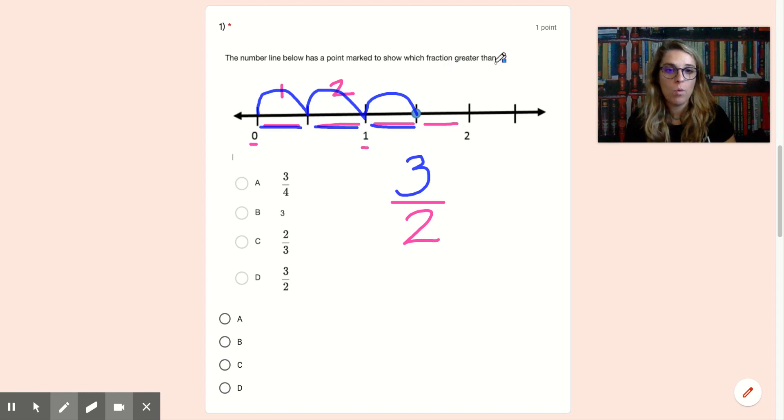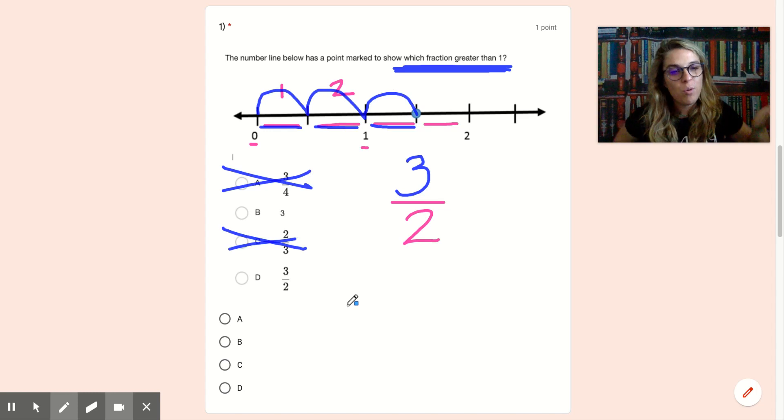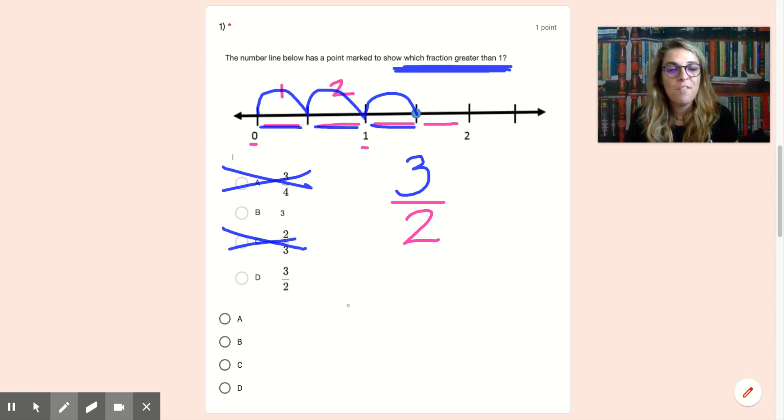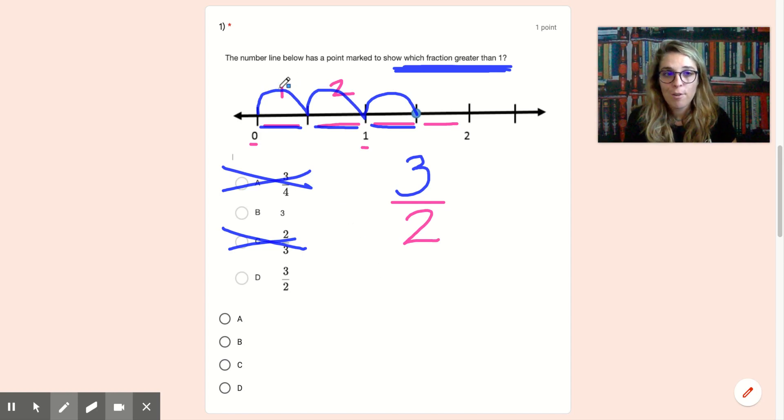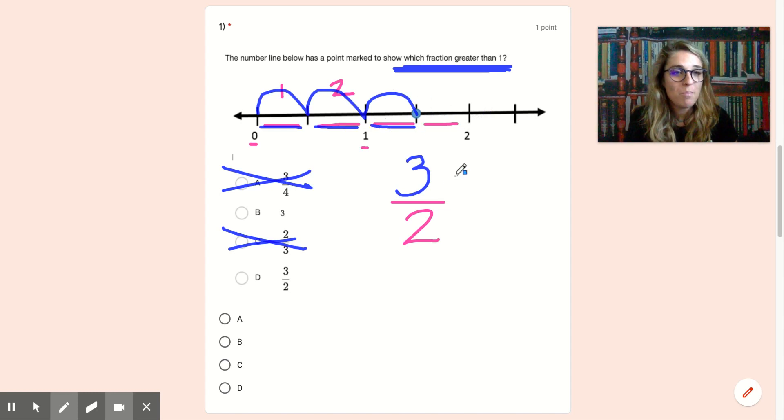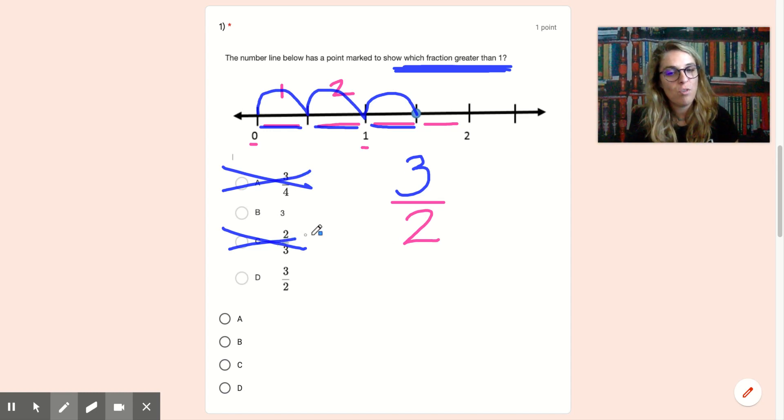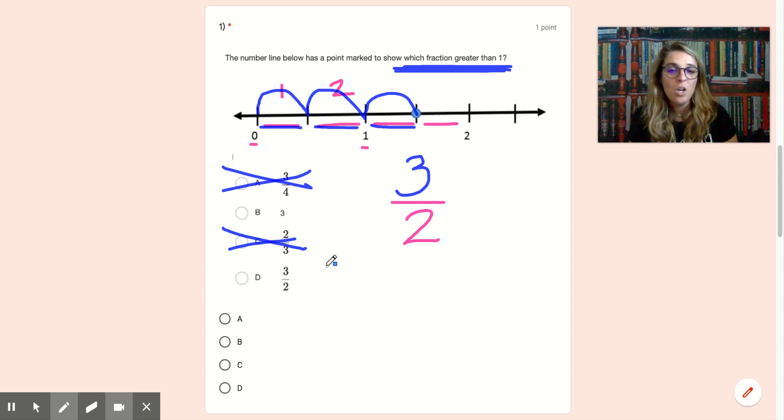It is greater than one, but we knew it would be greater than one because the question even asks us, the number line below has a point marked to show which fraction greater than one. So when we're looking at our answer choices, we actually could have immediately gotten rid of both A and C. Why do you think we could have gotten rid of those immediately? If you're thinking to yourself, well, because those are less than one whole, kiss your brain, you're absolutely right. My question tells me the number line below has a point marked to show which fraction greater than one. So I know my answer is going to be greater than one. Also, if I look at my number line, this dot past one, it's bigger than one. Three fourths of a whole, I don't even have all my pieces. I need four. I have three. Two thirds of a whole, I don't have all my pieces. I need three and only have two. So those answer choices just don't even make sense.